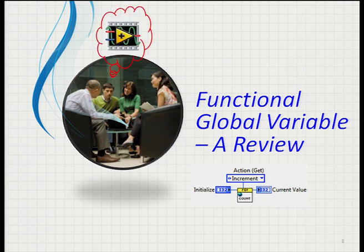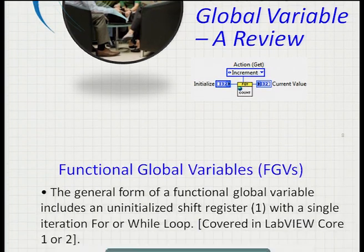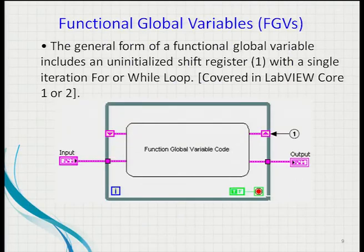A quick review of the Functional Global Variable: a typical sub-VI icon has a numeric indicator, an output, and a set of actions. Typically you use a type definition enum to control the different actions. Many of you in this room have already used this kind of sub-VI format. The purpose of the uninitialized shift register is to store data.